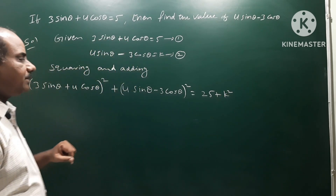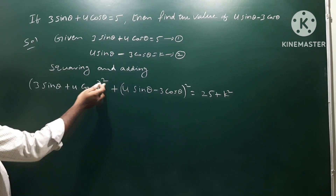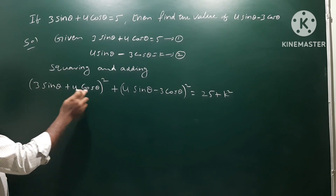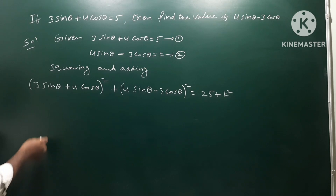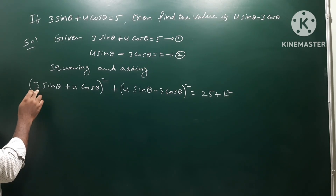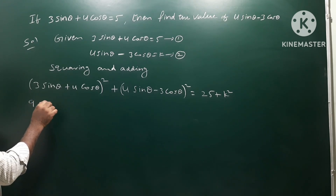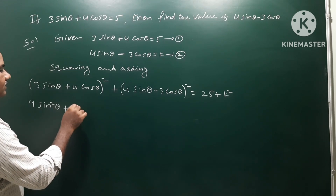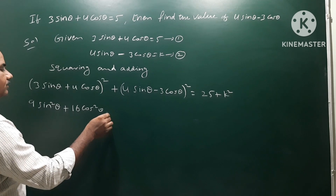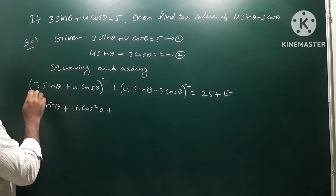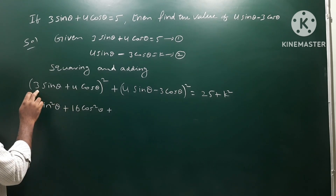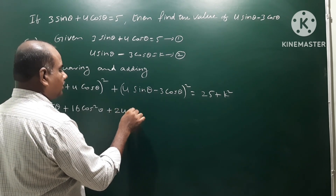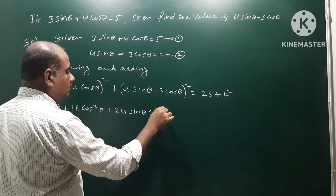Expanding (a + b)² where first term is 3sinθ and second term is 4cosθ: a² gives 9sin²θ, b² gives 16cos²θ, and 2ab gives 2 × 3 × 4 sinθ cosθ = 24sinθ cosθ.